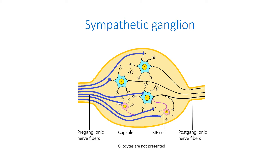For example, celiac, superior mesenteric, and inferior mesenteric ganglia. The histological structures of para- and prevertebral ganglia are similar. They consist of multipolar neurons and satellite cells covered with connective tissue capsules. Here, the preganglionic sympathetic nerve fibers, which are myelinated, synapse with the postganglionic neurons.